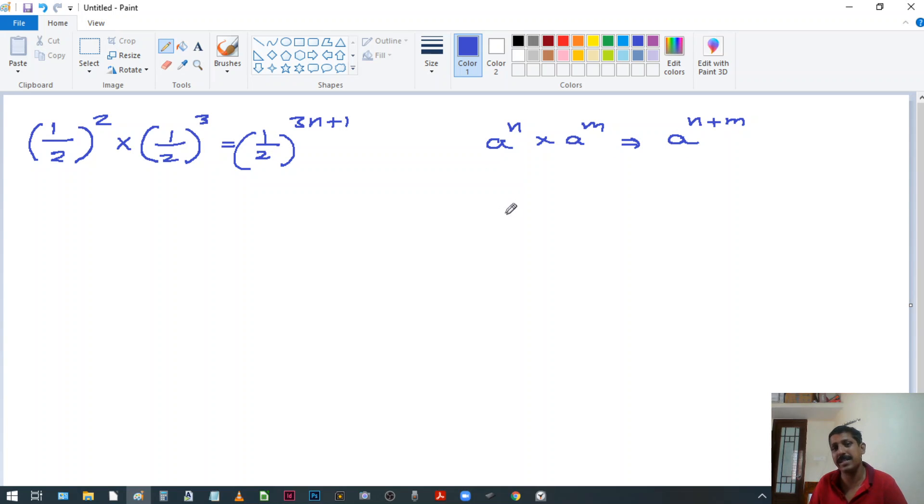So the other one, if the bases are different, suppose I just say a and b, both are different, and the powers are same like n and m. Then what do you say? Then it comes like this. We multiply the bases, then we put it as the power, we write it as n. So this is a rule.